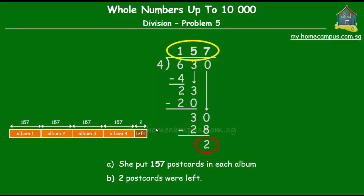To check your answer, you must check that if you added up all these, or if you multiplied 157 by 4 and then added 2 to that, would you get 630, which is the original number that we started with? Let's find out. We multiply 157 by 4. Let's see what answer we get.